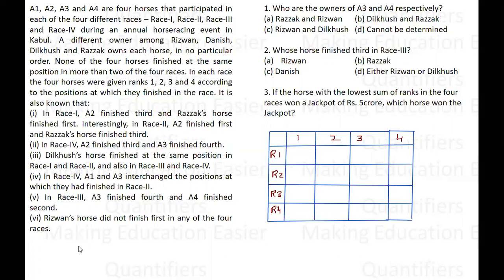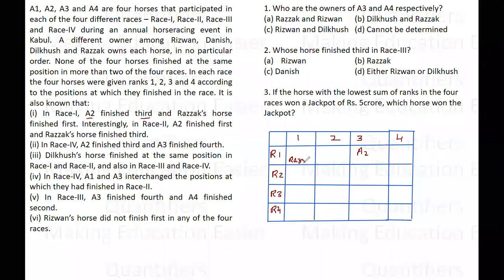It is given that in the first race, a2 finished third. And Razak's horse finished first in race 1. In the second race, a2 finished first, whereas Razak's horse finished third.